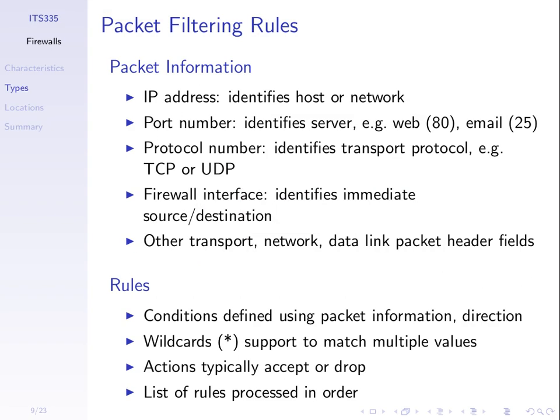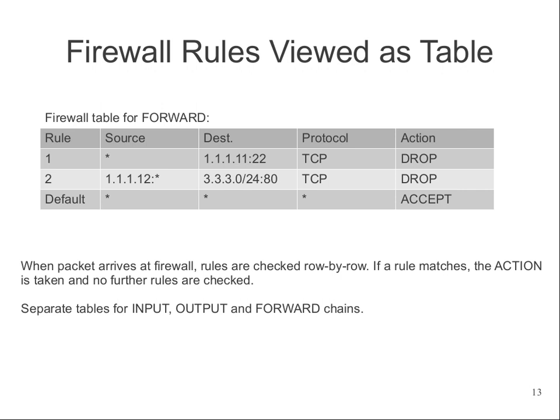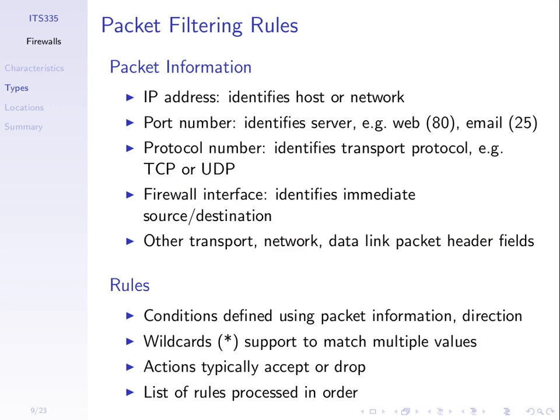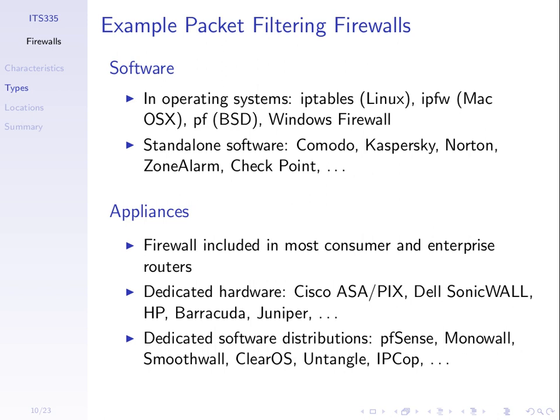Packet filtering firewalls are simple — they deal only with packet header fields like addresses, ports, and protocol numbers. They are very fast because the firewall only looks at the header, which is always in the same position and can be processed in hardware, resulting in minimal delay for accepted packets.